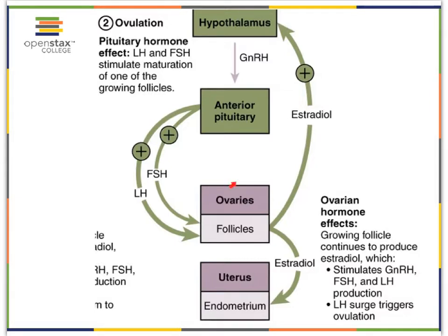As our follicles continue to mature, eventually one of them will become the mature follicle — the Graafian follicle — and produce so much estrogen that this amount of estrogen, specifically estradiol, will actually feed back to the hypothalamus and have a positive impact, triggering the anterior pituitary to release all of the FSH and LH it had continued to collect and store while FSH and LH were blocked by slowly increasing estrogen levels. So when we have this high level of estrogen from the Graafian follicle, we see a positive feedback mechanism, which ultimately leads to the LH surge or LH peak, and that results in ovulation.